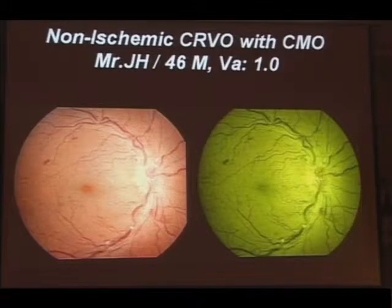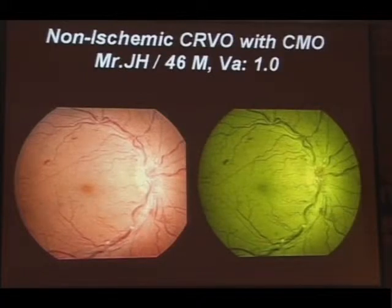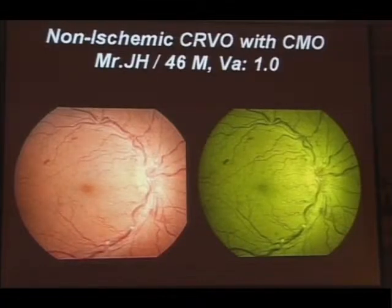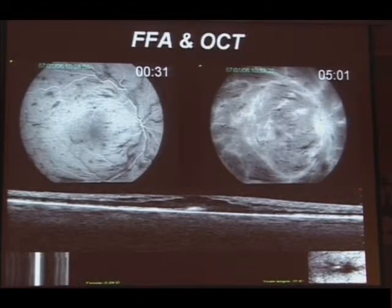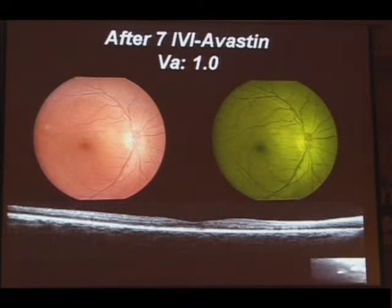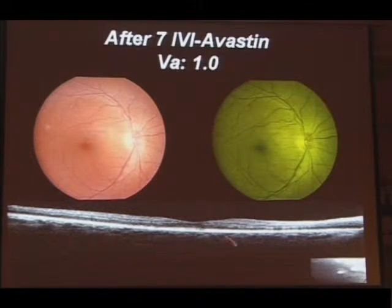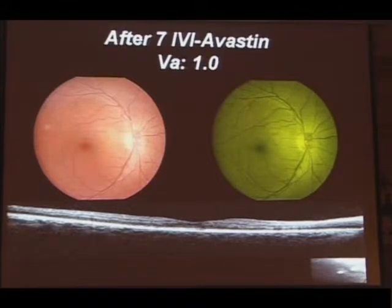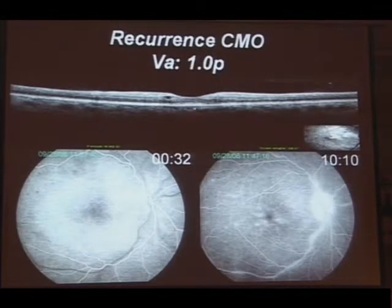Now, this is a very interesting case. He presented with amaurosis fugax of two months duration — a 46-year-old male, not a smoker. He was diagnosed as having a non-ischemic central vein occlusion with cystoid macular edema. The fluorescein angiography showed extensive changes in the veins and OCT confirmed the cystoid changes. He has had seven intravitreal triamcinolone injections. With the third injection, he had complete resolution of macular edema, but once the effect of the drug wears away, we can literally time the recurrence — and this is one of those recurrence episodes.